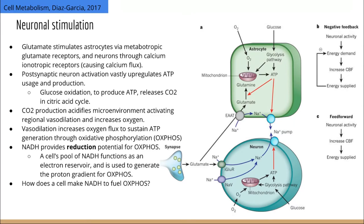NADH provides the reduction potential for oxidative phosphorylation — the negatively charged, high-energy electrons for oxphos. Oxphos, where ATP is primarily produced, requires NADH because that's where it gets the electrons needed to pump protons and power ATP synthase. NADH creates the proton concentration gradient that powers ATP synthase. Just think of NADH as a carrier of energy in the form of reduction potential, or the ability to donate electrons.